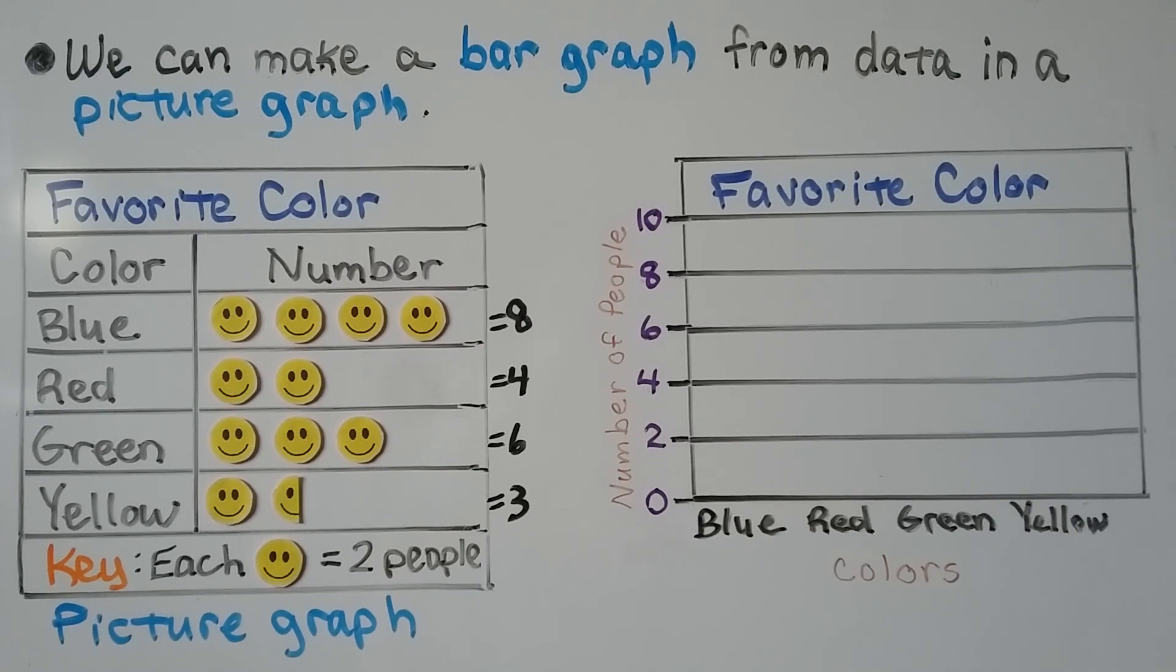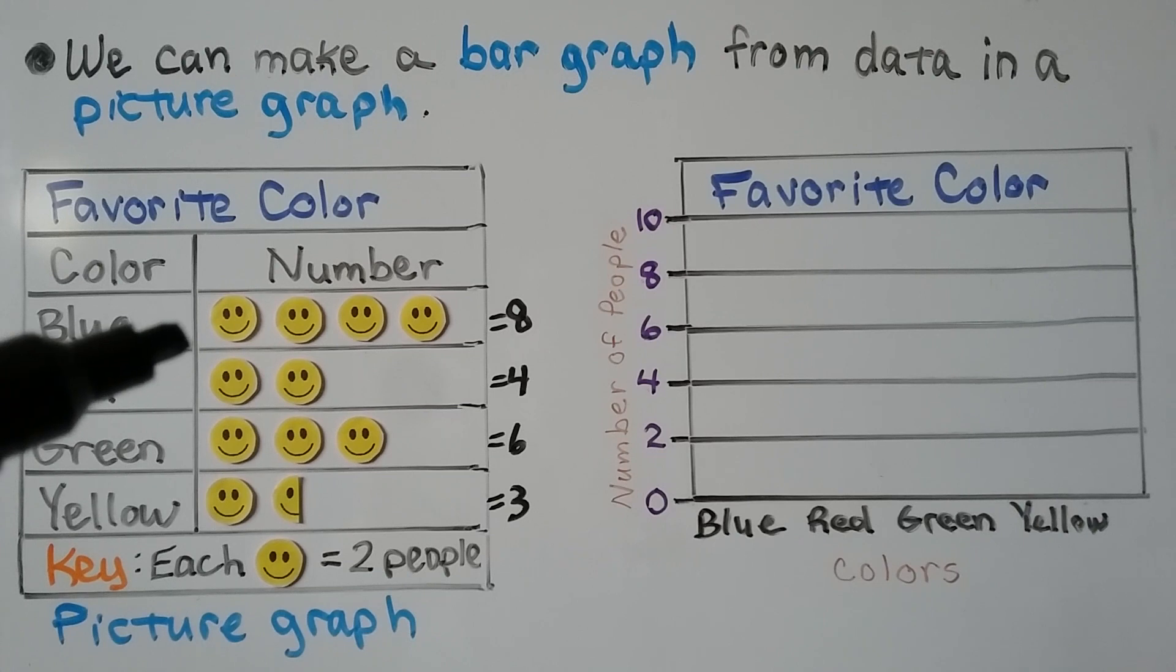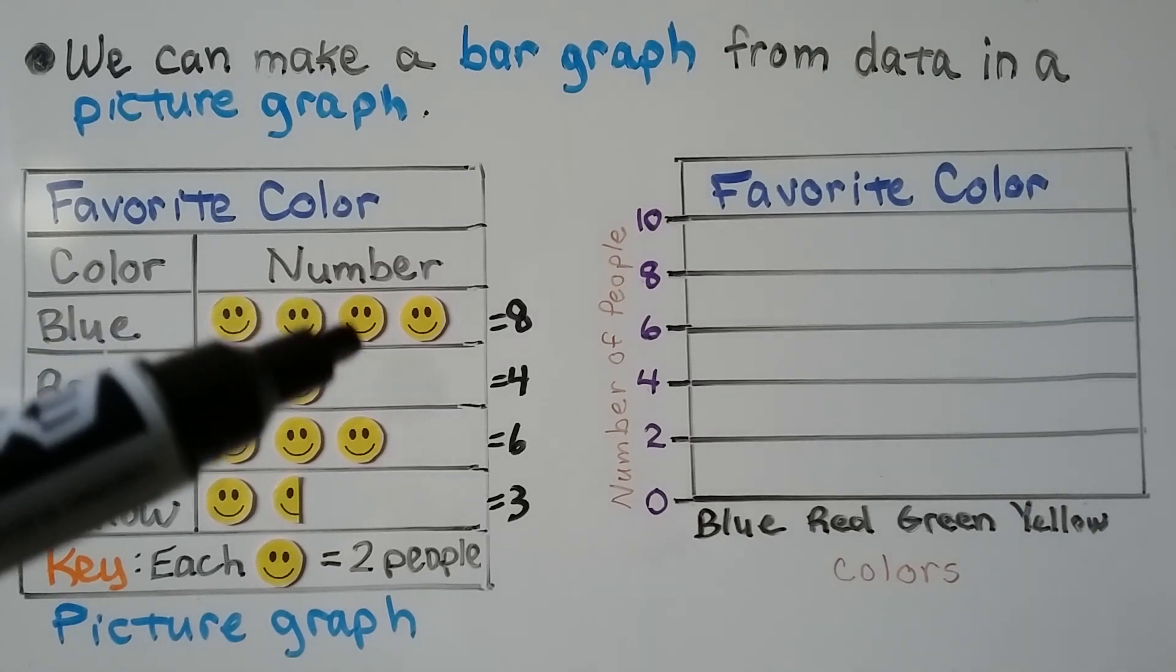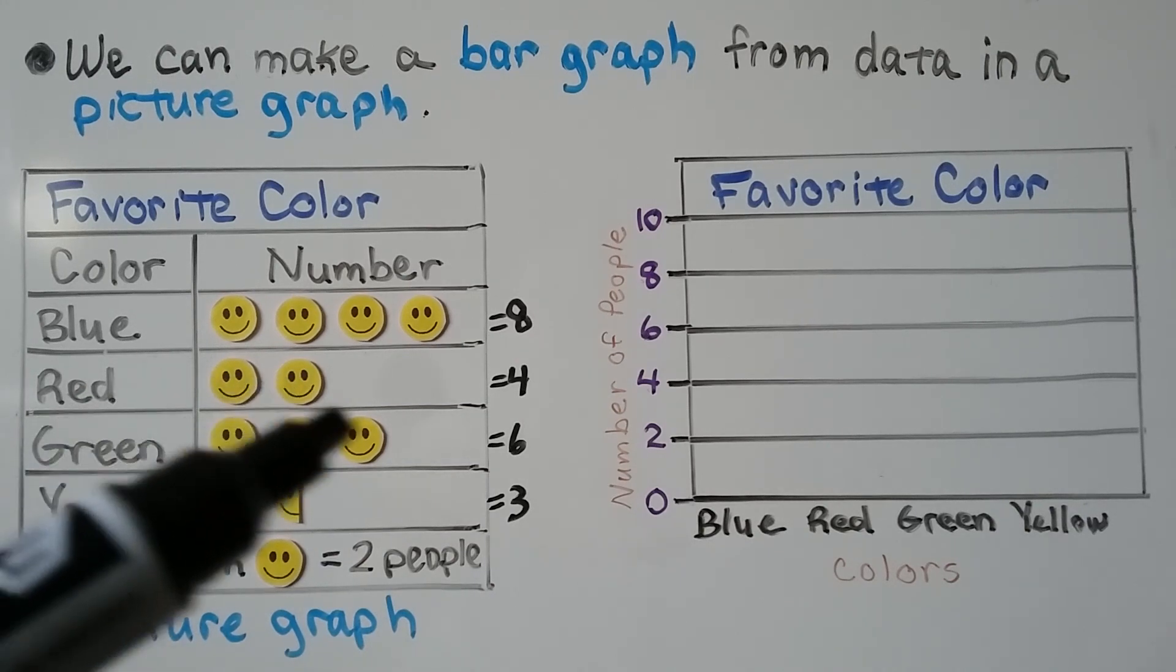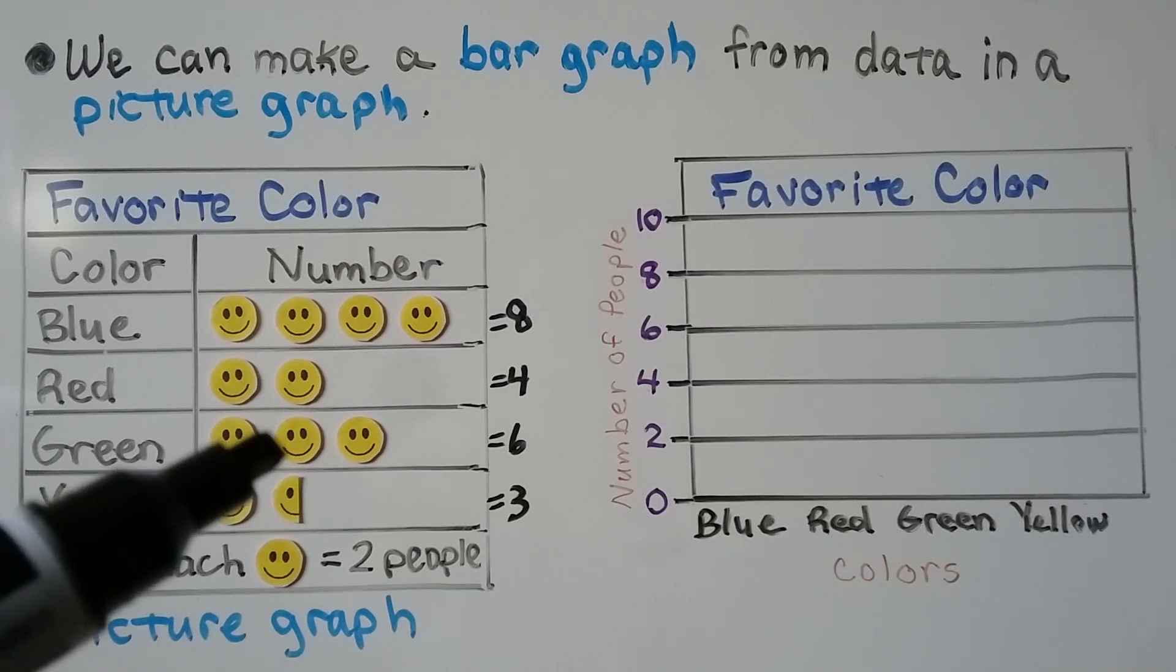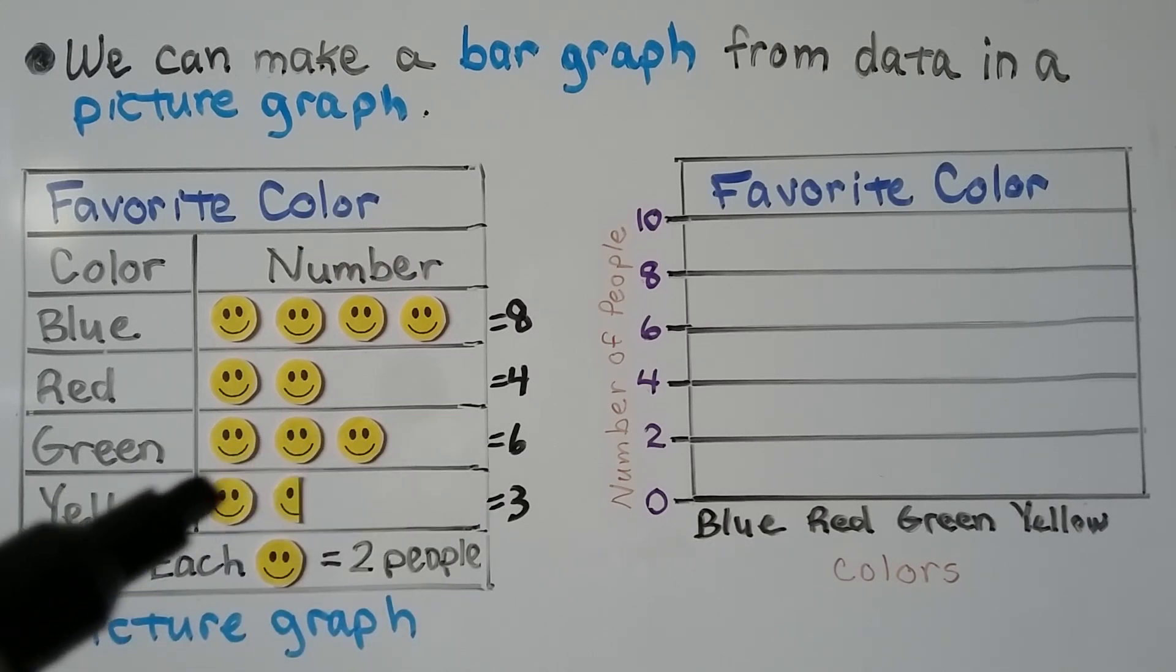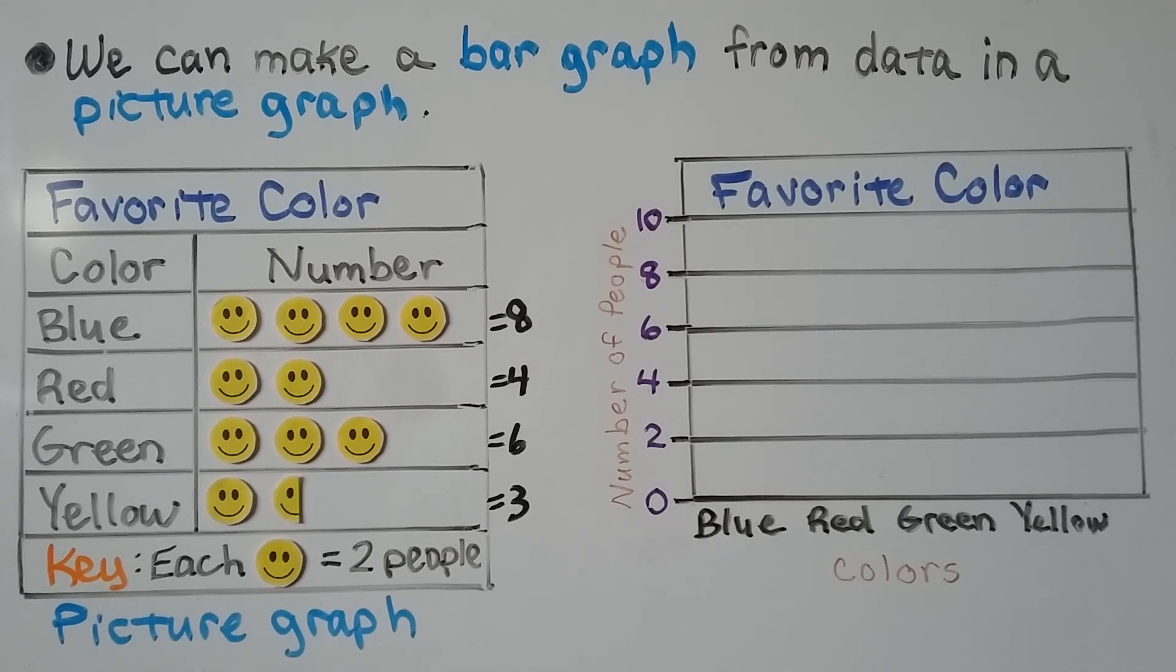We can make a bar graph from data in a picture graph. Our key tells us that each smiley face equals two people. So for blue, we skip count by twos: 2, 4, 6, 8. So blue is 8. Red is 2, 4, so that's a 4. Green is 2, 4, 6. Yellow has a whole smiley face and a half smiley face. If a whole smiley face equals 2, then half of a smiley face must be 1. So we have 2 plus 1, that's a 3.